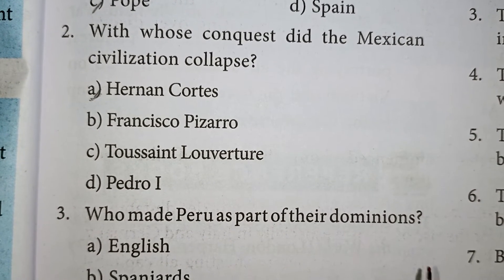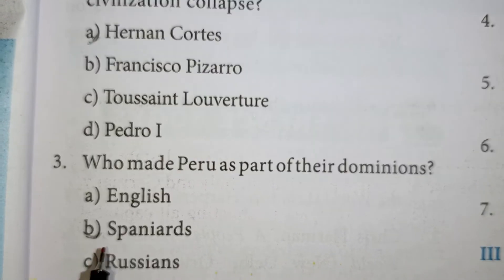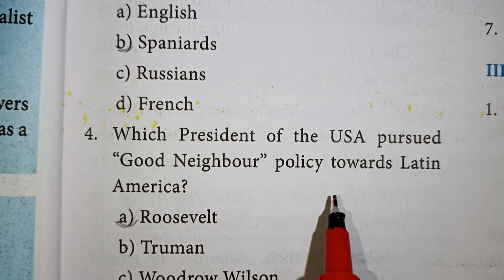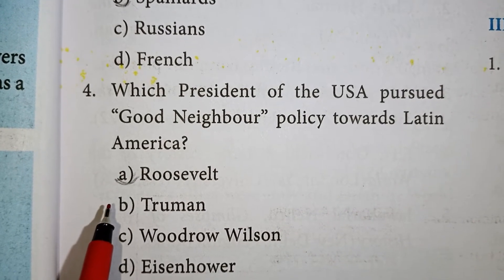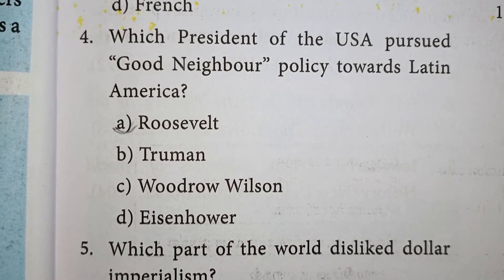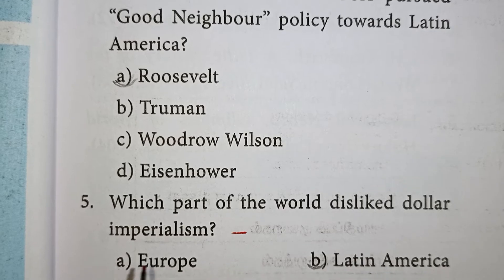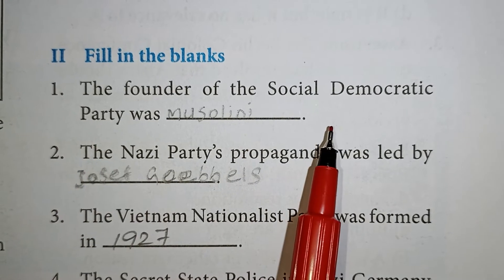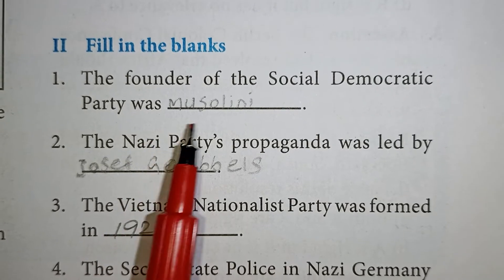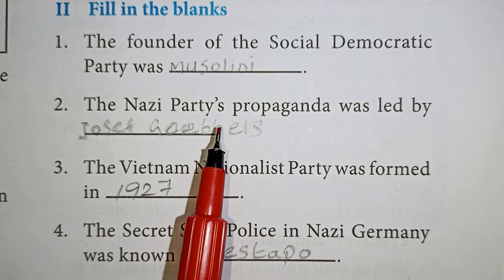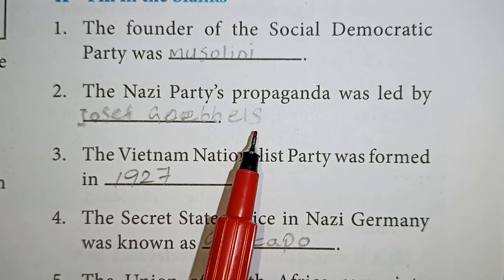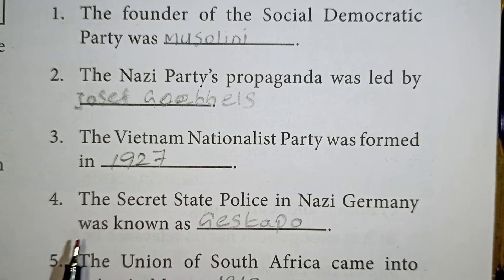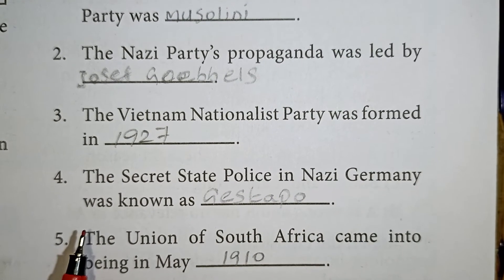Who made Peru a part of their domination? The Incas is correct. Which president of the world pursued the Good Neighbor policy towards Latin America? Roosevelt is correct. Which part of the world disliked dollar imperialism? Latin America.